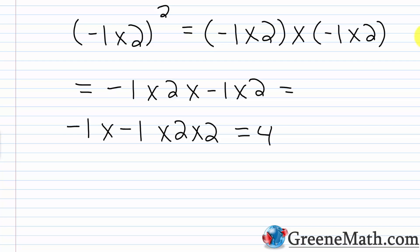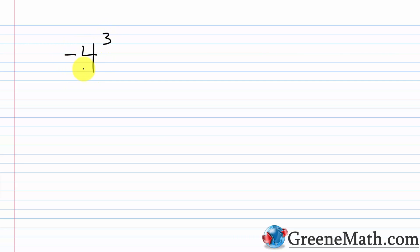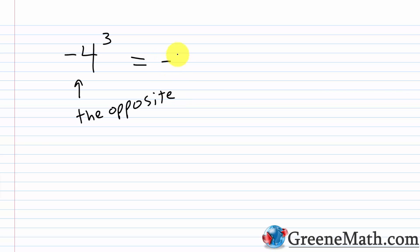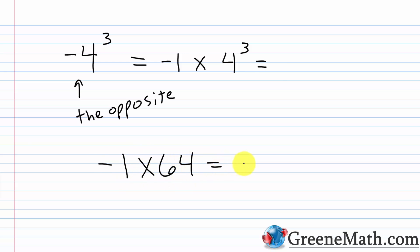Moving forward, the key thing to realize is: if I have a negative number and I want to raise it to a power, I have to enclose that negative number inside a set of parentheses. Now, there are some scenarios where you'll get the same result even with wrong notation. For example, negative 4 to the third power written without parentheses is technically the opposite of 4 cubed, which I can write as negative 1 times 4 cubed. Following order of operations: 4 cubed is 4 times 4 times 4, which is 64, so this is negative 1 times 64, which is negative 64.